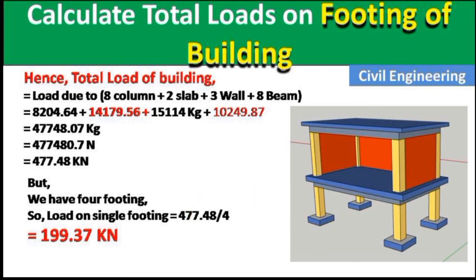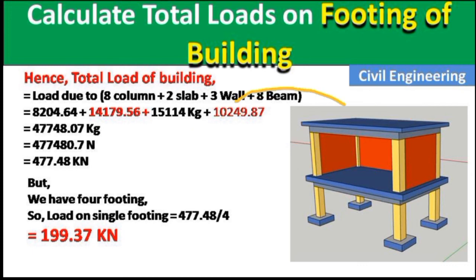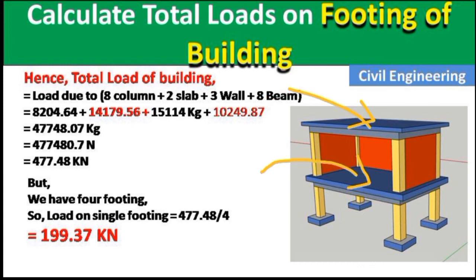An important note: while designing a real building, we must also add live load on the slab. Live load is typically taken as 2 to 3 kN/m² on the slab, because people, furniture, and other things move on it. I have not included live load in this example, but as a civil engineer you must not forget to add it.